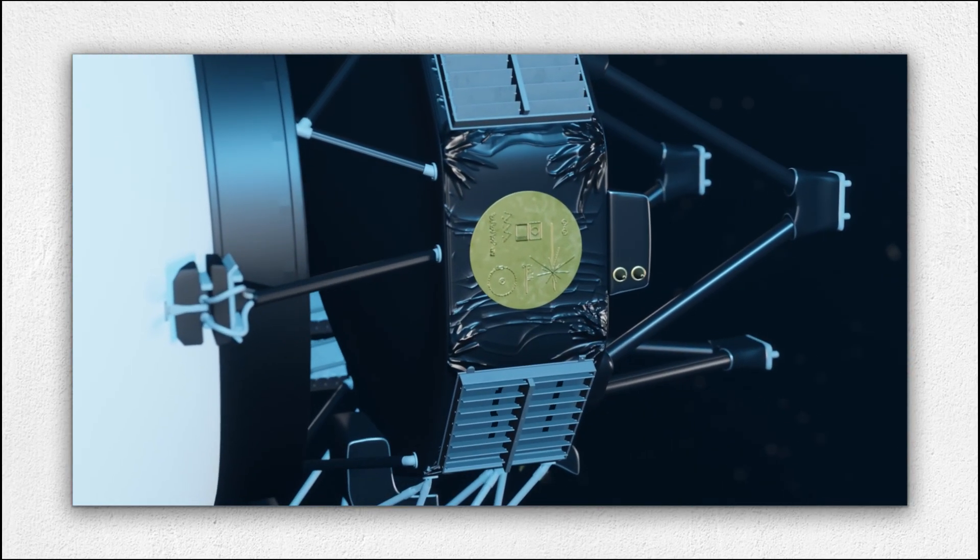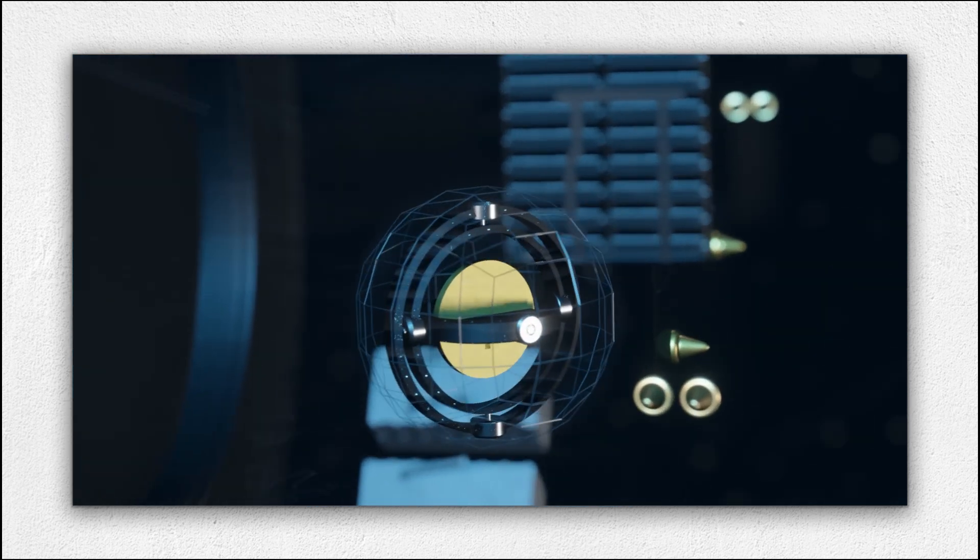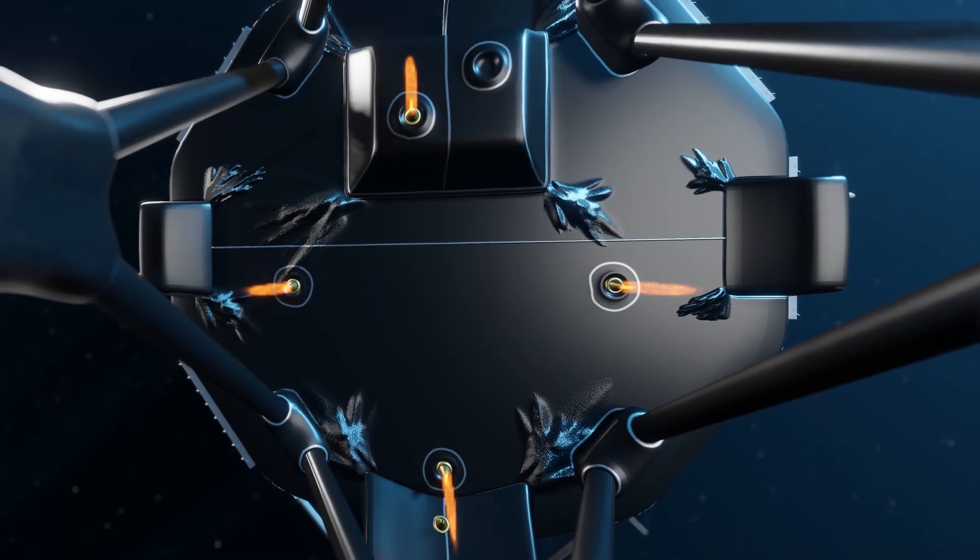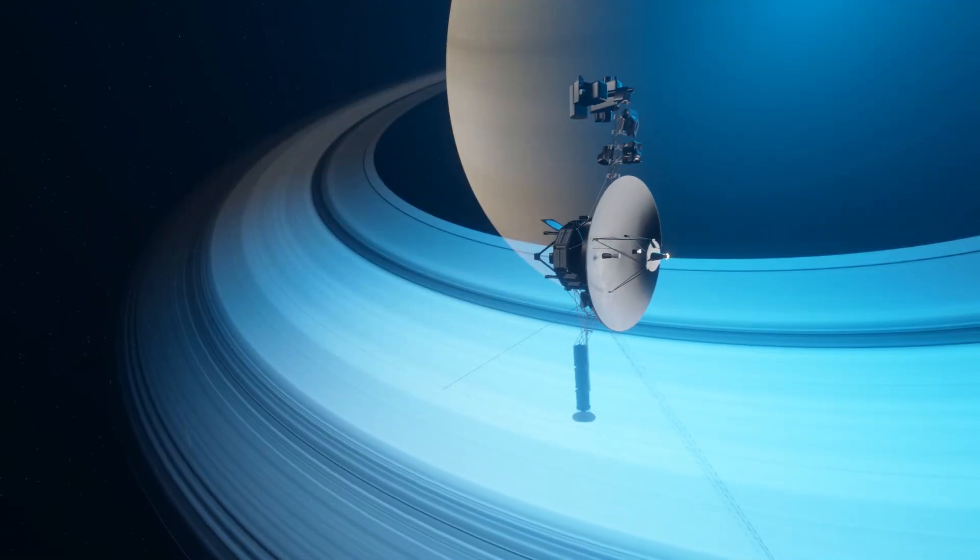The issue is simple but profound. Voyager 1 doesn't have a neutrino detector. In fact, no spacecraft does, because detecting neutrinos requires massive underground facilities shielded from cosmic radiation.